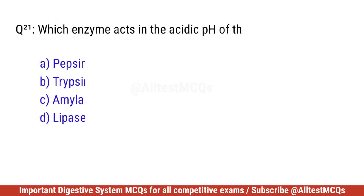Question twenty-one. Which enzyme acts in the acidic pH of the stomach? Correct option is A. Pepsin.